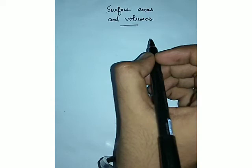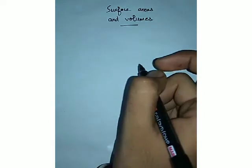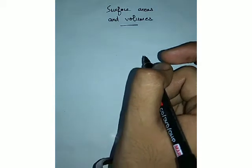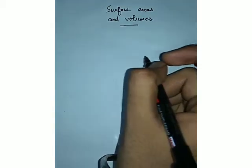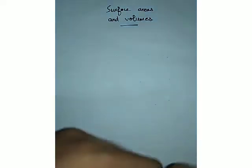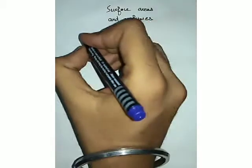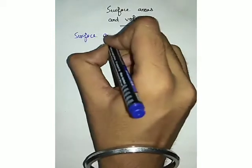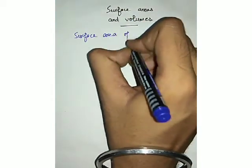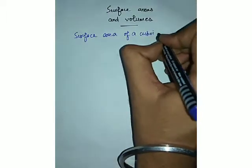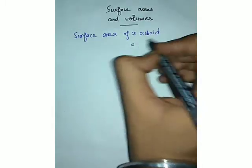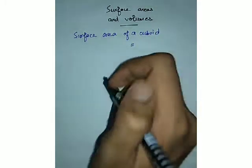In this video we'll be discussing the surface area of a cube as well as a cuboid, and with the help of an example we'll be applying the formulas as well. Let me write the formulas. The very first is surface area of a cuboid. The basic difference between a cube and a cuboid is that the length of all sides of a cube is the same, but the length of all sides of a cuboid is not the same.